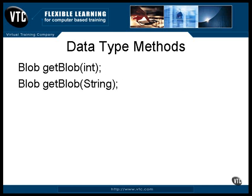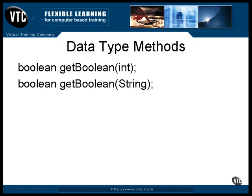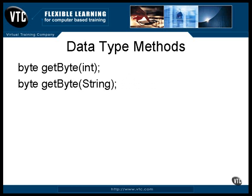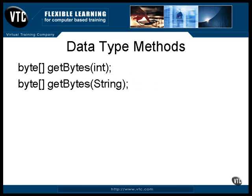Some use this data type to store encrypted information. A blob object is a Java object that contains blob data and provides access to it. It returns the Java keyword true or false. These methods return the value as an 8-bit signed integer, or you can return a value as an array of bytes.